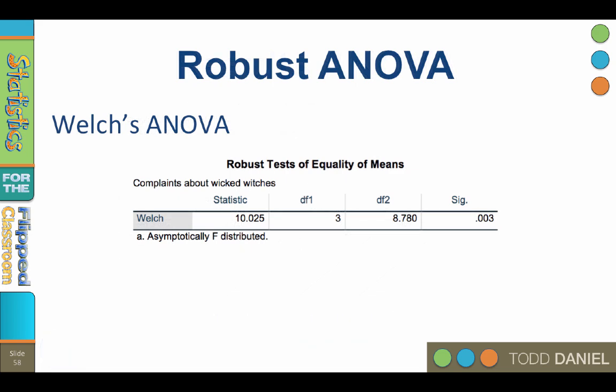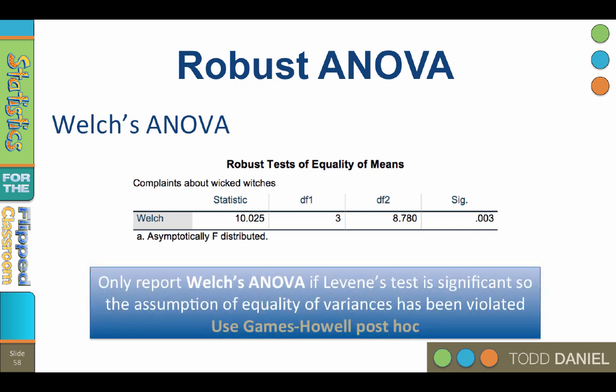As you scroll down, you will also encounter Welch's robust test for equality of means, or Welch's ANOVA. If Levene's test had been significant — meaning the assumption of homogeneity of variance was violated — then we would interpret using Welch's ANOVA and, if significant, the Games-Howell post hoc. I have another video illustrating this situation. For now, you can ignore this output because we do not need it.